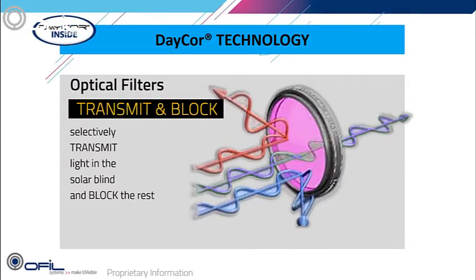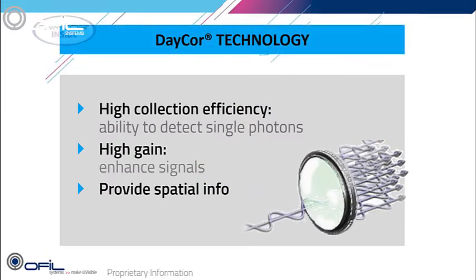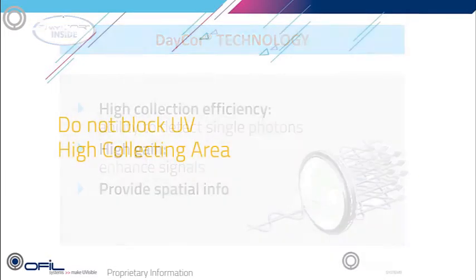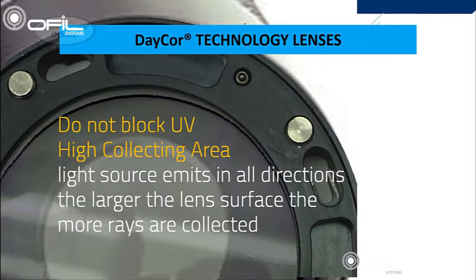The core proprietary optical filters select light in the 240 to 280 nanometer range and transmit it to the detector while blocking the rest. Filter efficiency is measured by the ability to collect as many photons as possible — the more radiation collected, the more information provided about existing discharges. DayCor uses lenses that do not block UV as regular lenses do; DayCor lenses have high UV efficiency and a large collecting area, giving a distinctively high ratio between transmitted UV and blocked visible light.